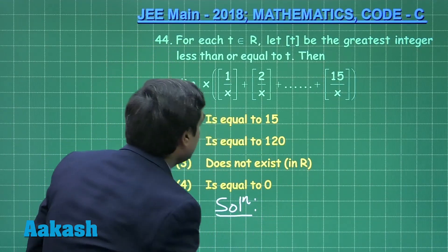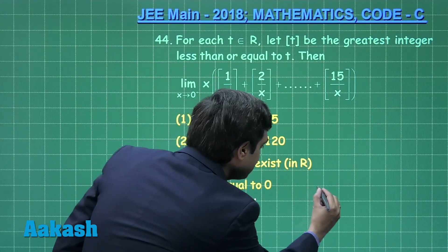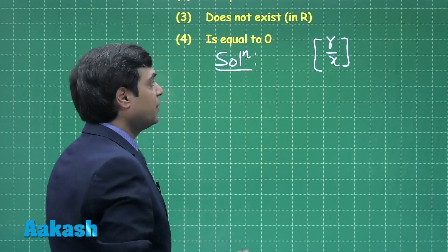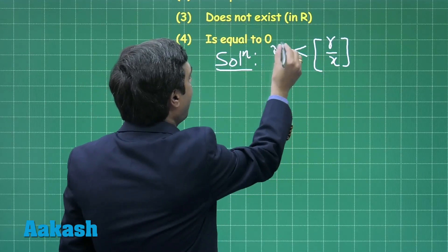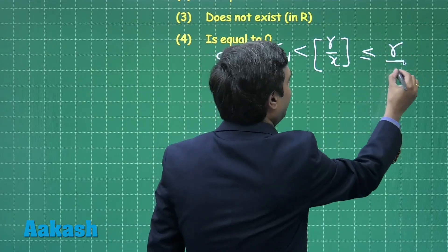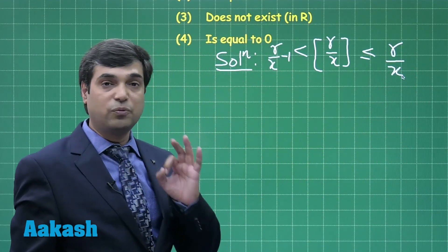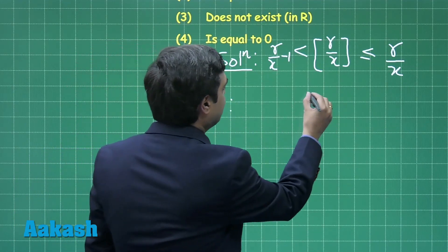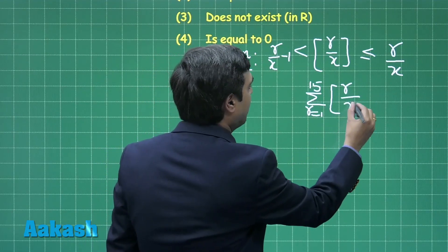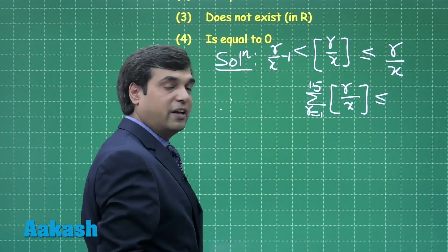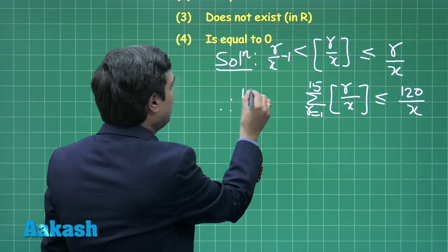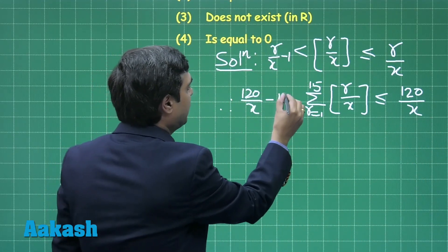We can solve it using the sandwich theorem, since we know that the greatest integer of r/x lies between r/x minus 1 and r/x. If we vary r from 1 to 15, the summation of greatest integer of r/x lies between 120/x minus 15 and 120/x.